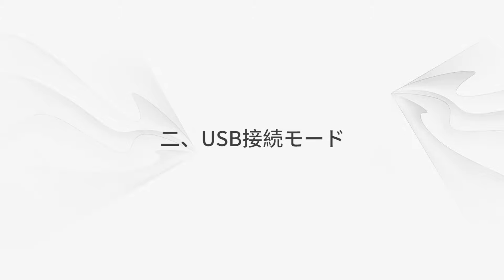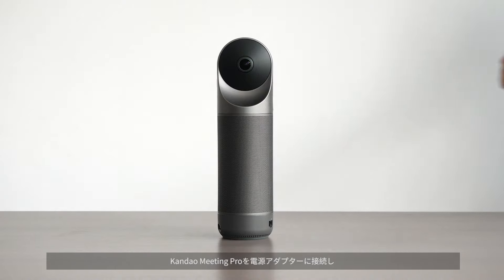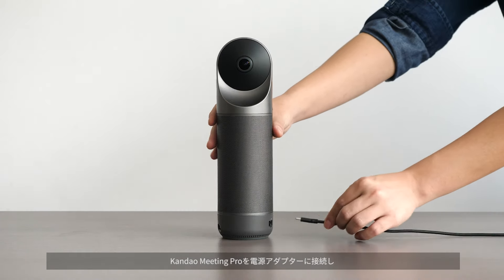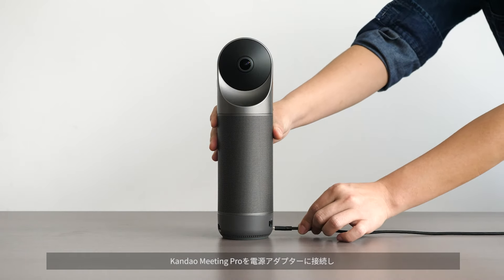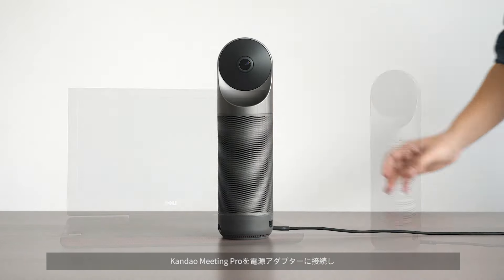USB Mode. What's needed: Meeting Pro, adapter, controller, computer, and USB cable. Plug in the power and connect Meeting Pro to the computer through the USB cable.